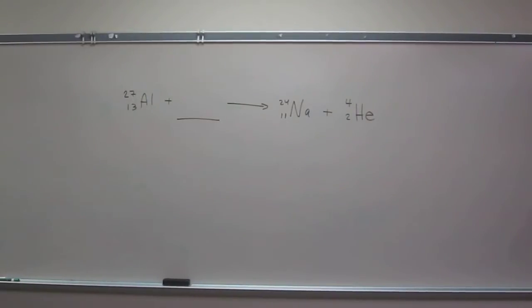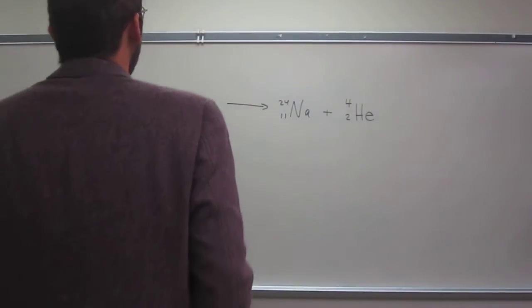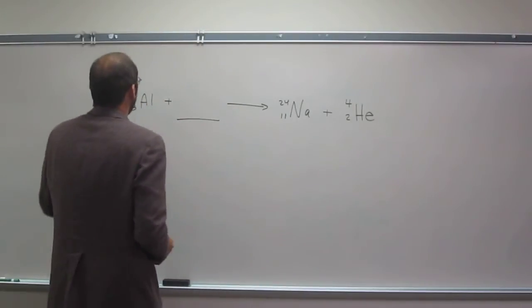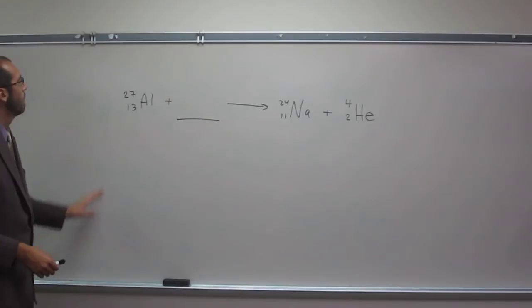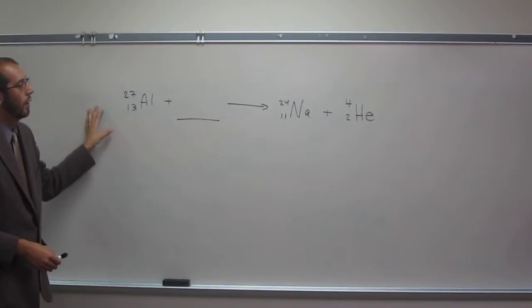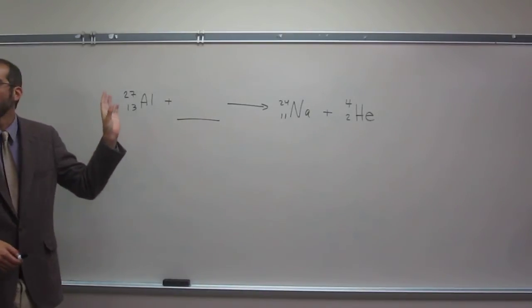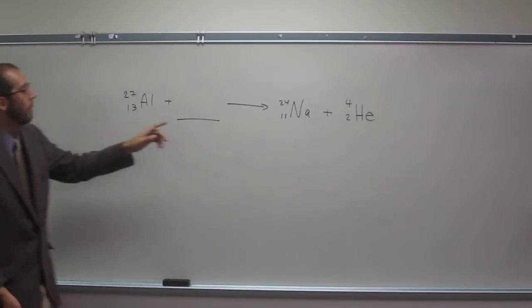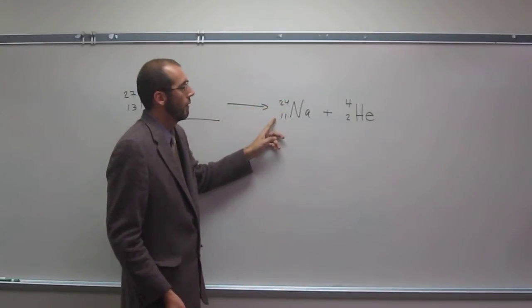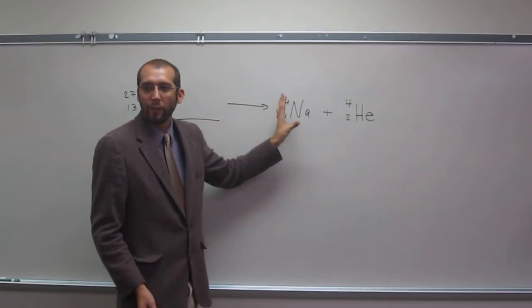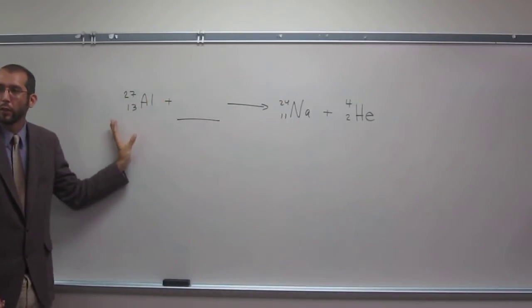Okay, let's go ahead and attempt to balance this nuclear chemical equation. Remember, it's just like balancing a regular chemical equation, so the number of neutrons and protons that you have on this side of the reaction, you have to have the same number over here.